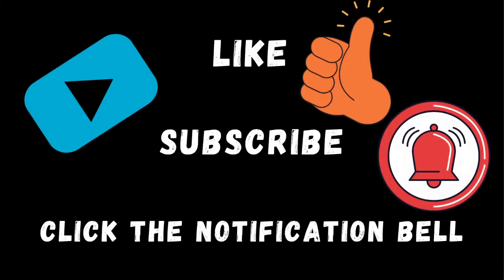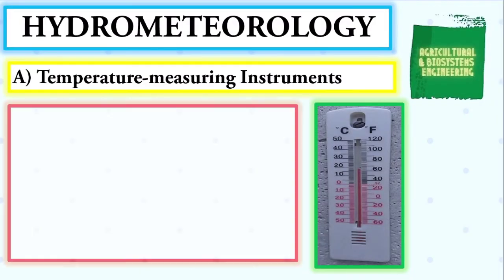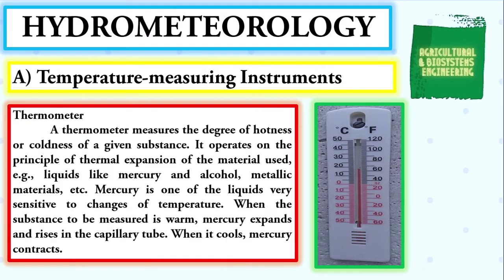We begin with the atmospheric temperature measuring instruments. We have the thermometer — it measures the degree of hotness or coldness of a given substance. It operates on the principle of thermal expansion of the material used.